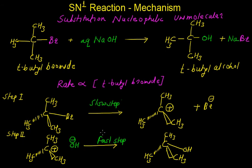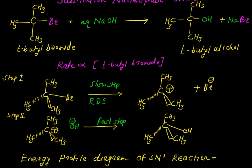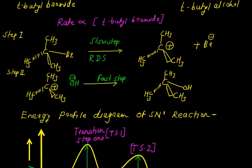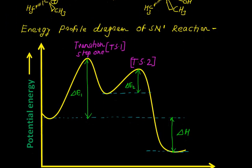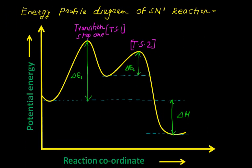Out of these two steps, the slow step is the rate determining step. It indicates that the first step is important in determination of the rate of this particular reaction. We can give evidence for this rate determining step with the help of the energy profile diagram of the SN1 reaction.